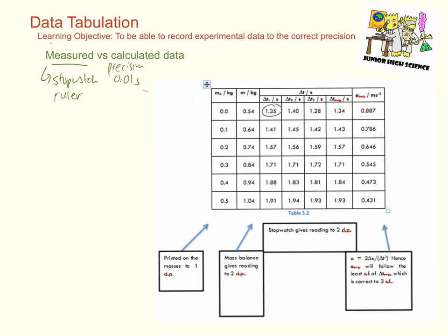So in this table, you notice that the data for time interval is given to two decimal places to reflect the precision of the stopwatches that we use to measure time interval.